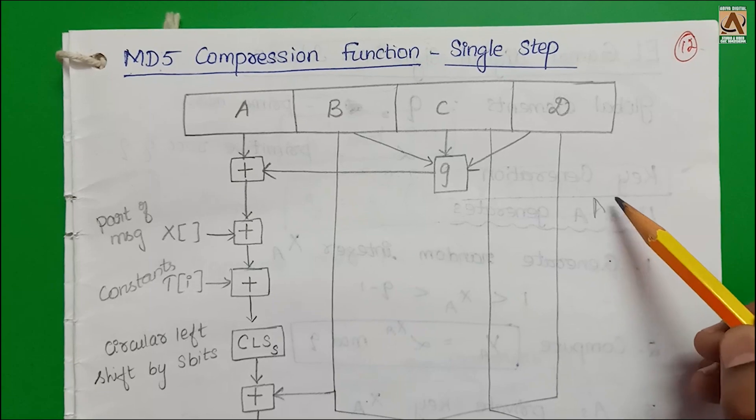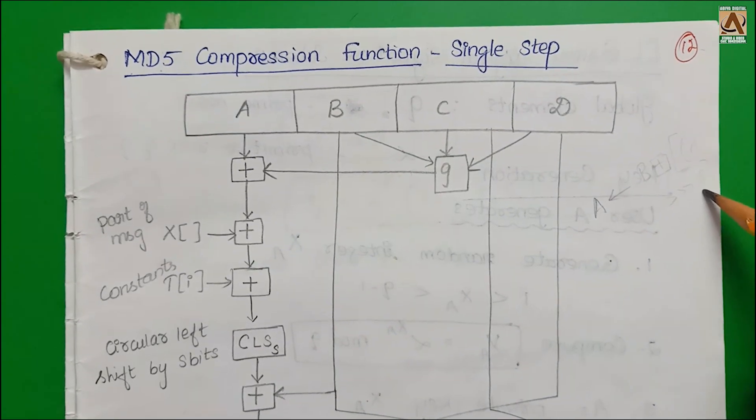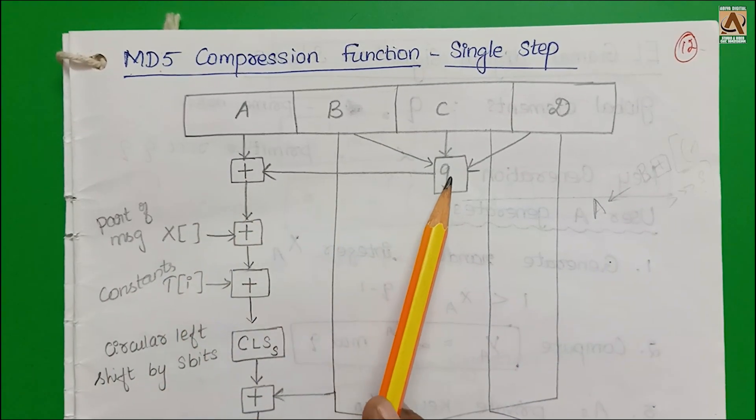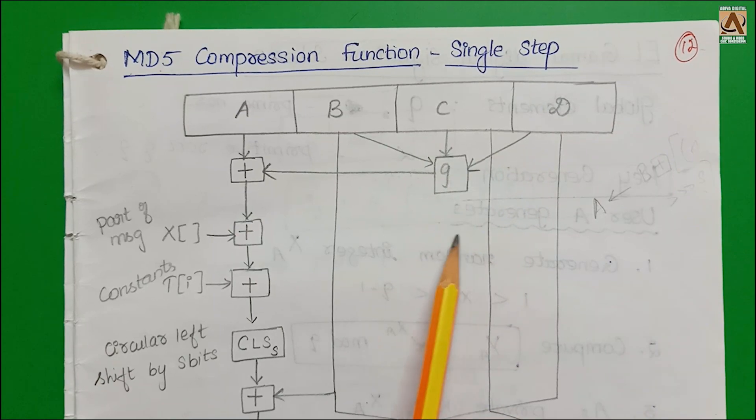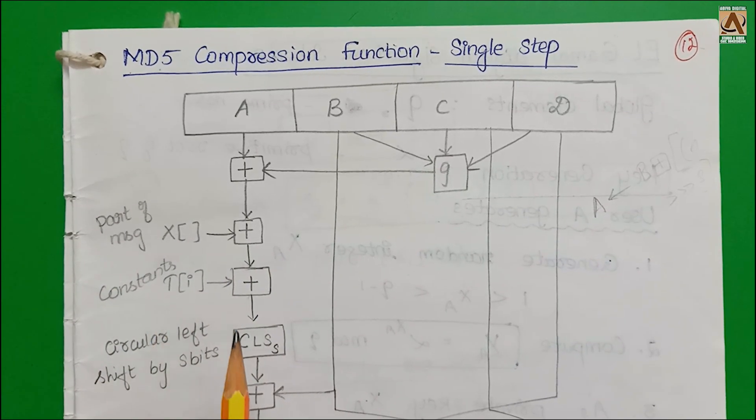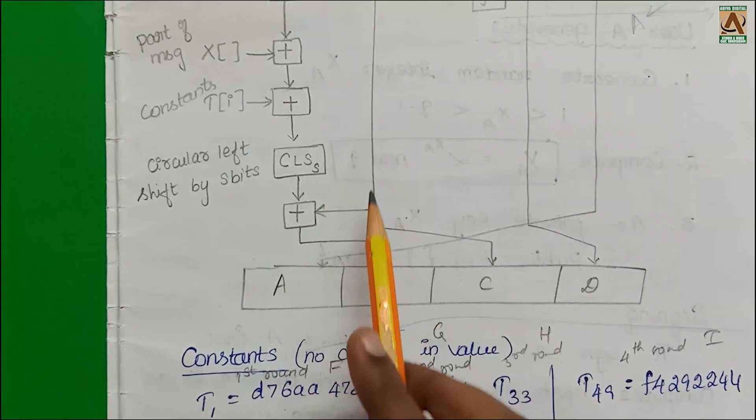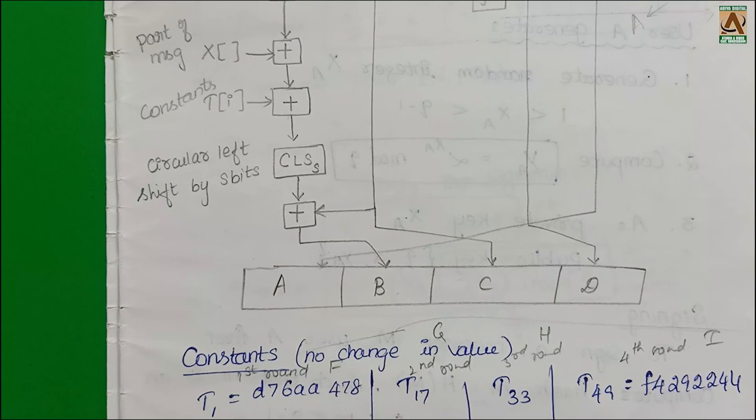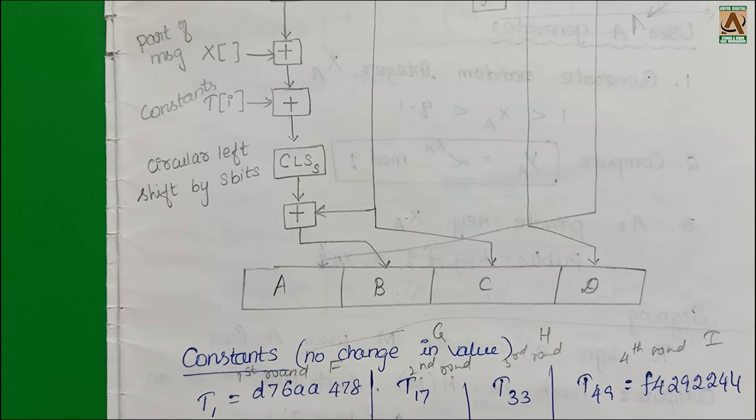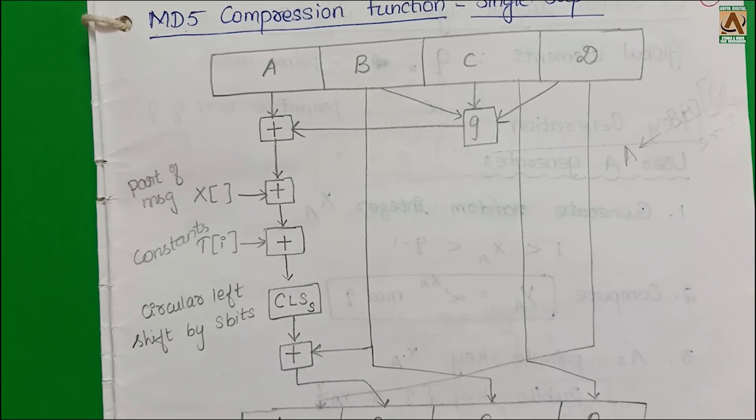Single step compression function formula: A equals addition of the function of B, C, D with part of the message, addition with constants, then circular left shift. That answer we are combining with B. Then B shifts to C, C to D, and D shifts to A. This is the compression function formula for MD5. D is shifted using circular left shift.